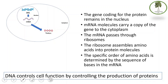This is how DNA controls cell functions — by controlling the production of proteins. Proteins are enzymes and channels in the membrane; they do most of the functions of the cell. So controlling how proteins are produced controls the whole cell's activities.